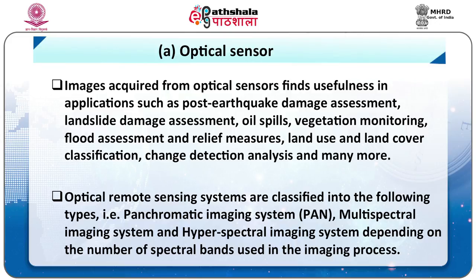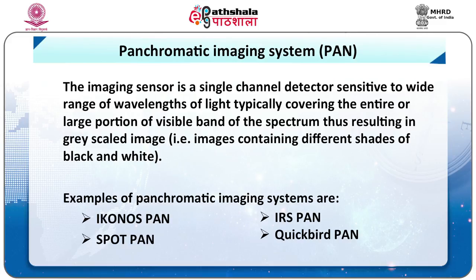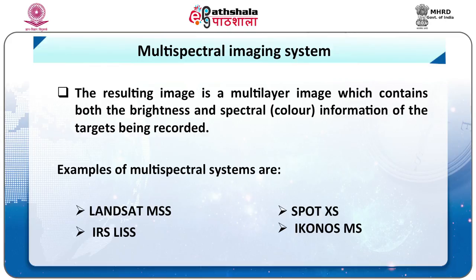Optical remote sensing systems are classified into three types: panchromatic imaging system, multispectral imaging system, and hyperspectral imaging system, depending on the number of spectral bands used. The panchromatic imaging system uses a single channel detector sensitive to a wide range of wavelengths, typically covering the entire visible band, resulting in grayscale images containing different shades of black and white. Examples include IKONOS pan, SPOT pan, IRS pan, and QuickBird pan. Figure 7 shows a panchromatic image from the SPOT pan sensor with a ground resolution of 10 meters.